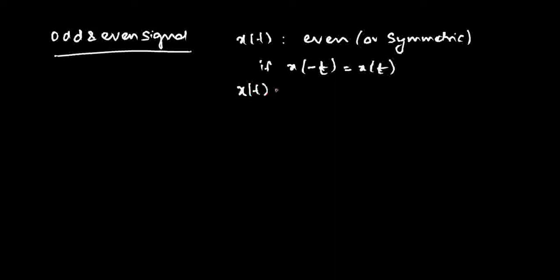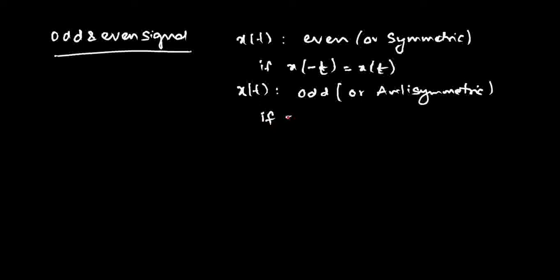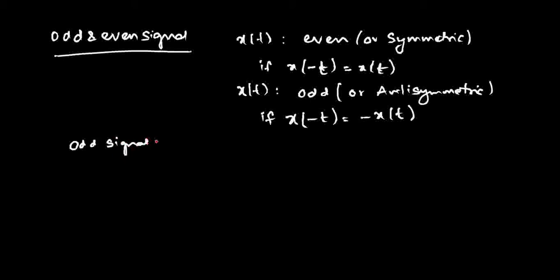A signal X of t is said to be an odd signal — also called anti-symmetric. This is called an odd signal if X of minus t is equal to minus X of t, meaning if you time-reverse the signal that will result in minus the original signal. This is the second way of classifying signals in terms of odd and even. For any odd signal, please note that X of 0 will be equal to 0.